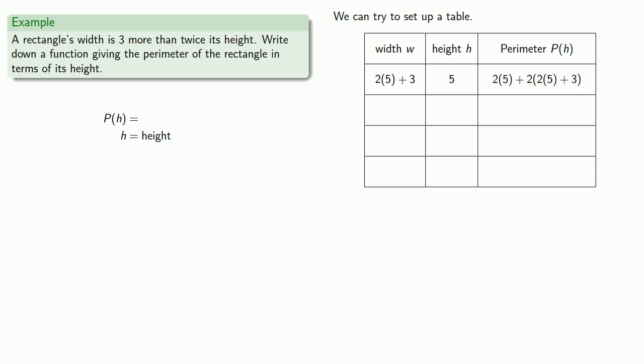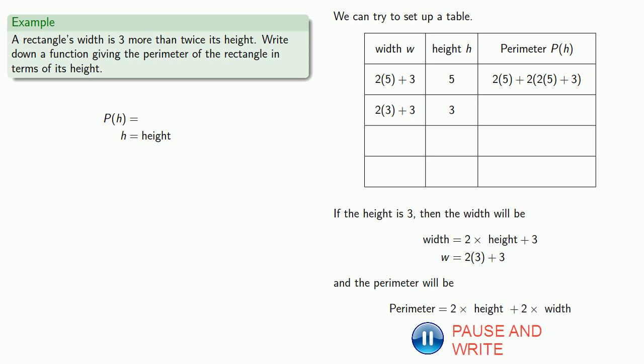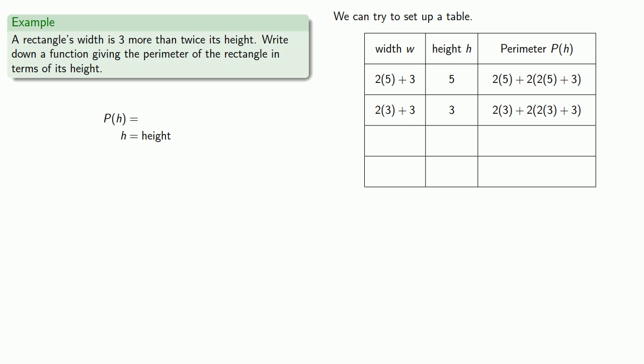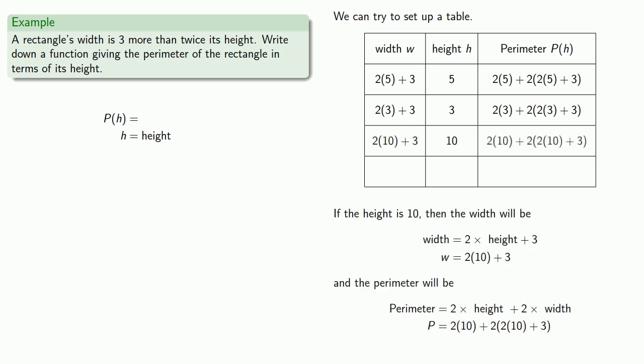Well, let's pick another value for the height. How about 3? If our height is 3, then the width will be 2 times 3 plus 3. And the perimeter will be 2(3) + 2(2(3) + 3). And again, we won't do the arithmetic. And if we pick another value, how about 10? Then the width will be 2(10) + 3. And the perimeter will be 2(10) + 2(2(10) + 3).